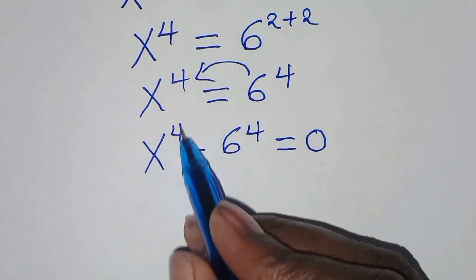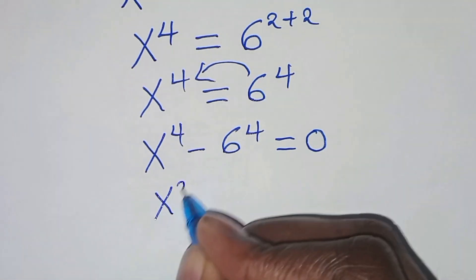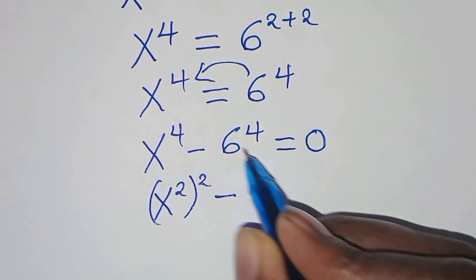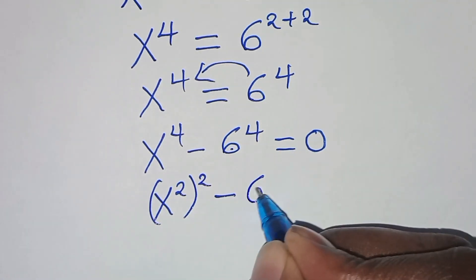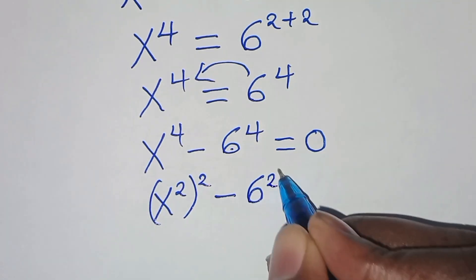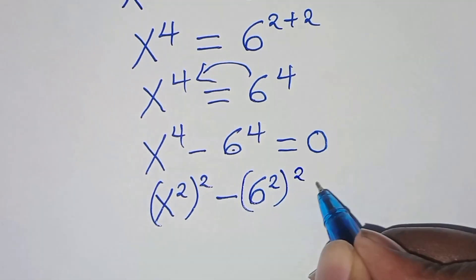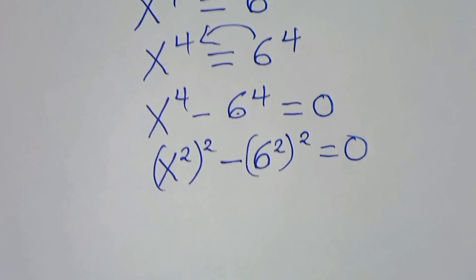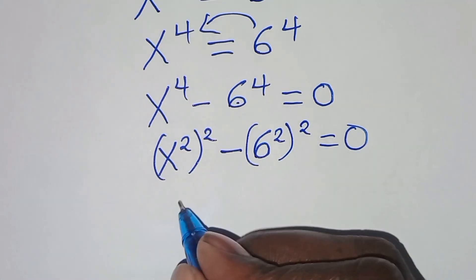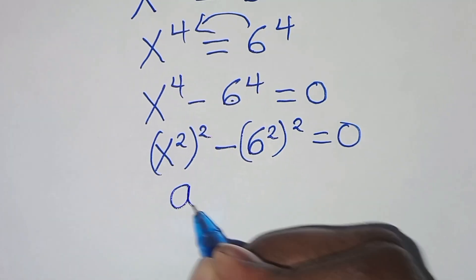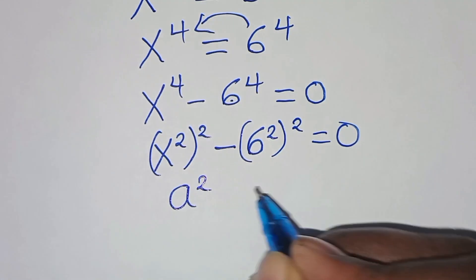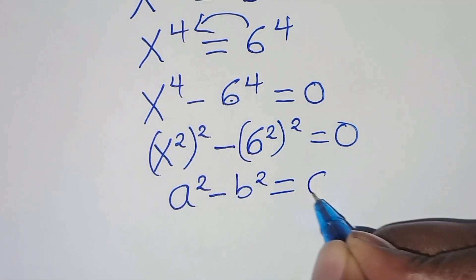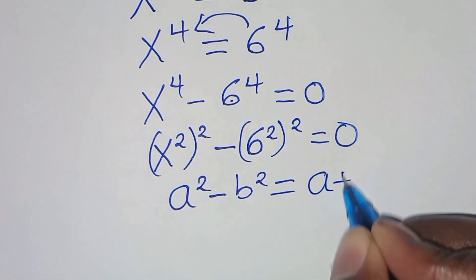We can express x to power 4 as x squared, raised to power 2, minus 6 to power 4 expressed as 6 squared, raised to power 2, all equal to 0. This equation is in the form of the difference of two squares: a squared minus b squared.